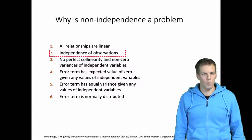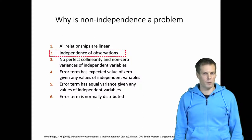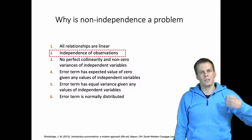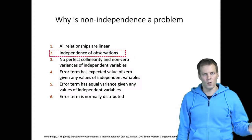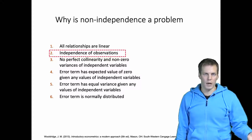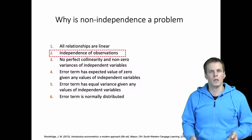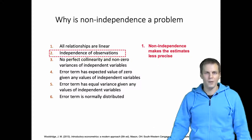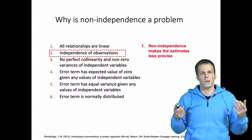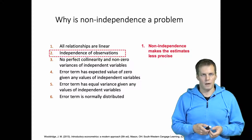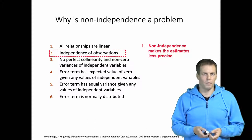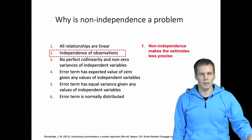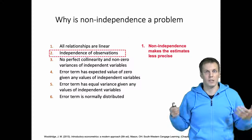So why is non-independence of observations a problem? As we saw, non-independence doesn't lead to bias or inconsistency, but it leads to less precise estimates, and that is something we can't easily address. If we don't have much information, we can't estimate things precisely — but that's not really a problem per se, because we can simply state that our estimate exists but is not very precise, and sometimes we just have to live with that.